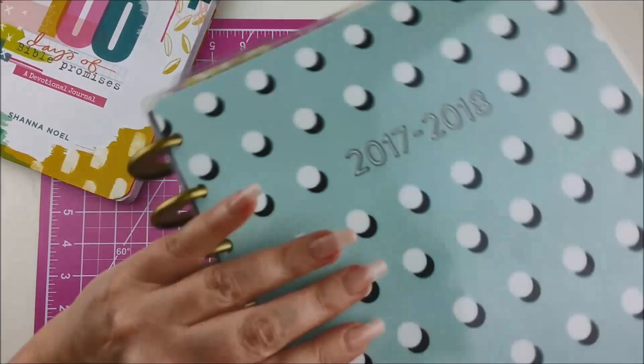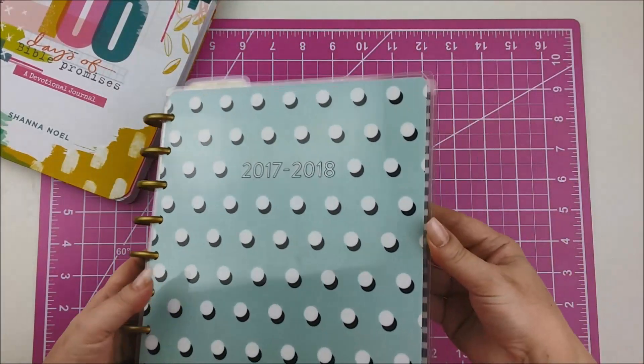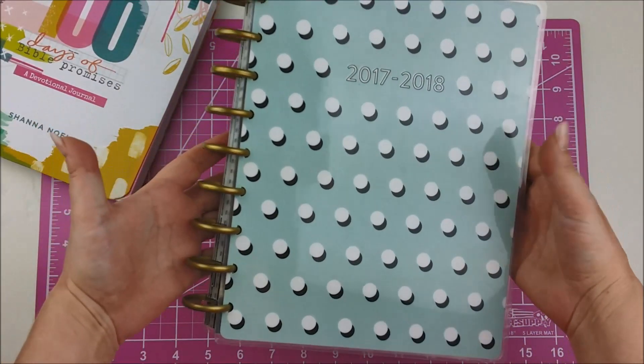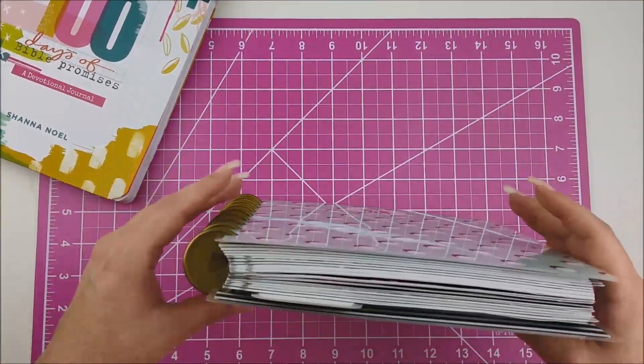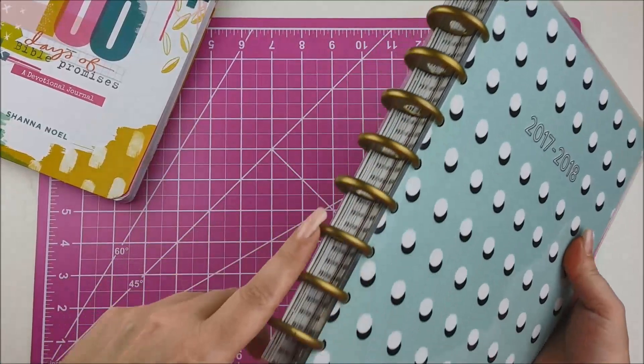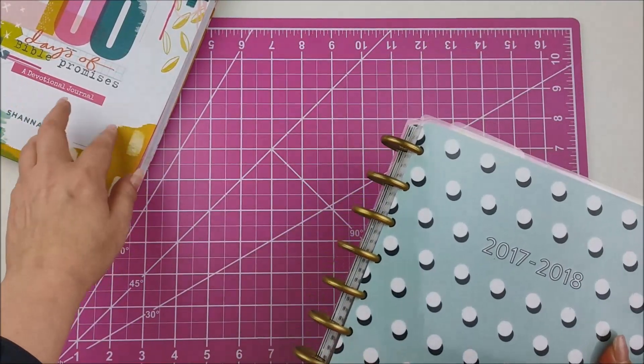Okay, so if you are a planner at all, you're familiar with these. Again, this is a classic size Happy Planner. I am going to remove last year's calendar to reuse these discs on my new Bible journal.